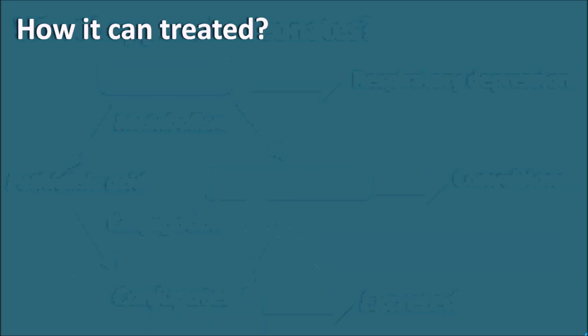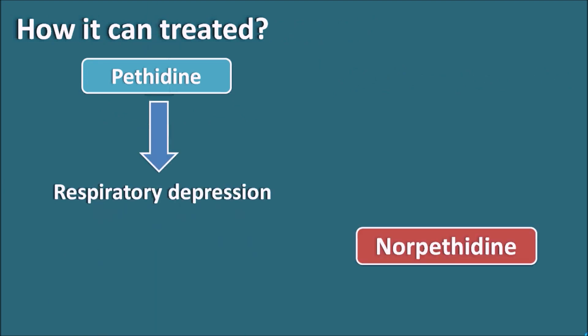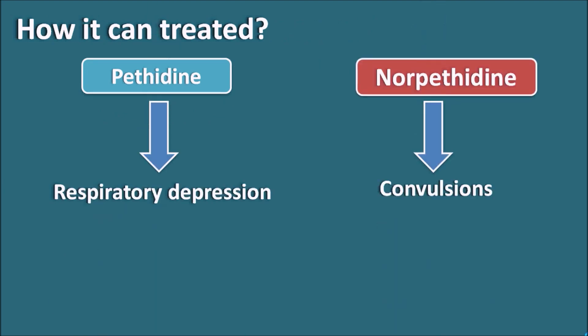Since Pethidine produces respiratory depression due to its opioid action, we can use an opioid antagonist like Naloxone to control the respiratory depression. However, the convulsions produced by Nor-Pethidine are a CNS excitatory effect not related to opioids, so Naloxone cannot control the convulsions produced by Nor-Pethidine.